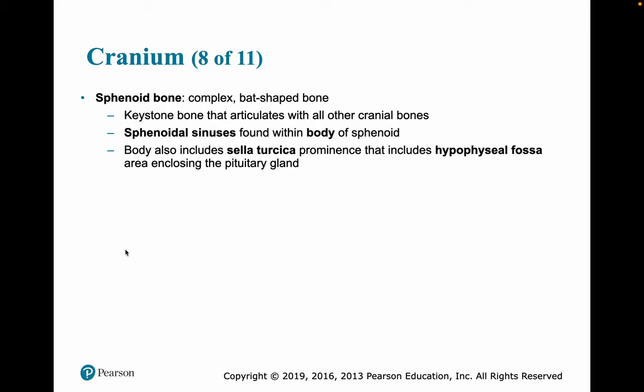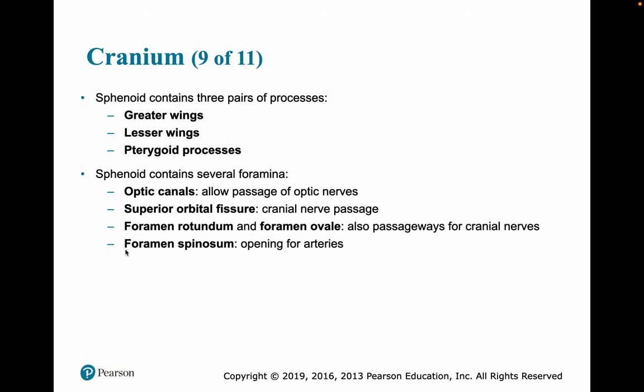The sphenoid bone is a complex, bat-shaped bone and a keystone bone — it articulates with all the others, holding everything in formation. It has sphenoid sinuses within the body, and the body also includes the sella turcica, a prominence that includes the hypophyseal fossa, which is the area that encloses the pituitary gland. The sphenoid contains three pairs of processes: the greater wings, the lesser wings, and the pterygoid processes. It contains several foramina, including the optic canals for the optic nerves, the superior orbital fissure for cranial nerve passageways, the foramen rotundum, the foramen ovale for cranial nerves, and the foramen spinosum, which is an opening for arteries.